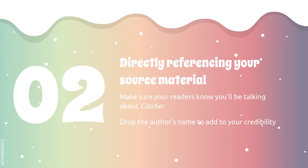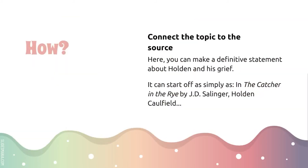Then you want to directly reference your source material. That's super easy — what we're talking about is Catcher. You want to add the author's name so that you look credible, and cite the title of the book correctly: it's The Catcher in the Rye. When you do it, connect the topic to the source so that it seems like it fits in the same paragraph.